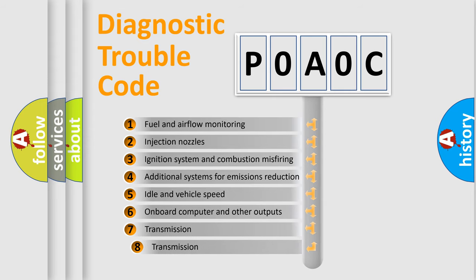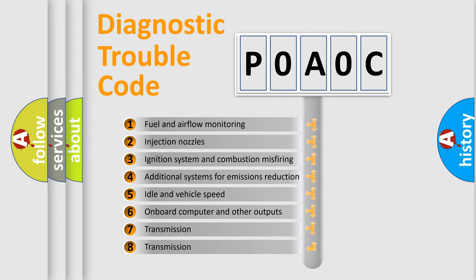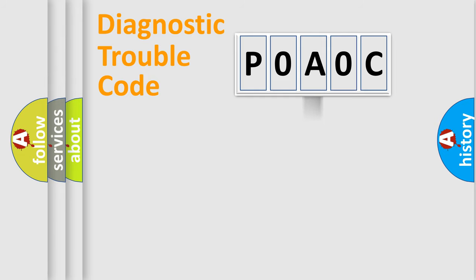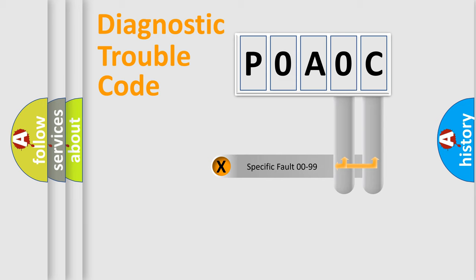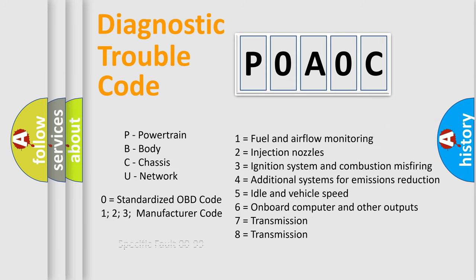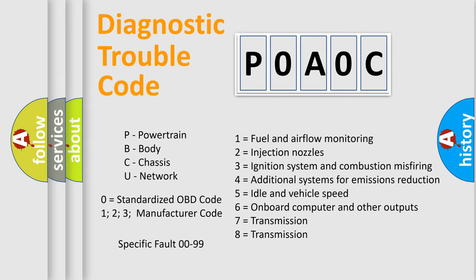The third character specifies a subset of errors. The distribution shown is valid only for the standardized DTC code. Only the last two characters define the specific fault of the group. Let's not forget that such a division is valid only if the other character code is expressed by the number zero.